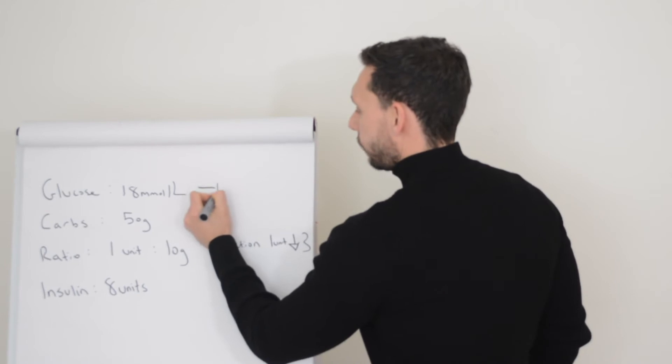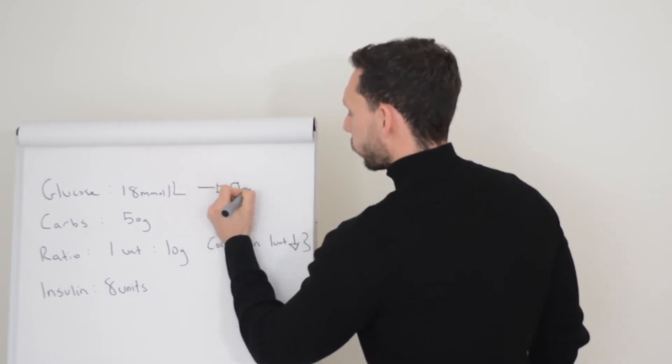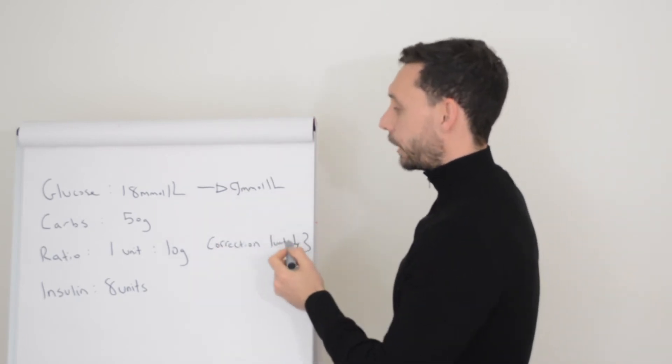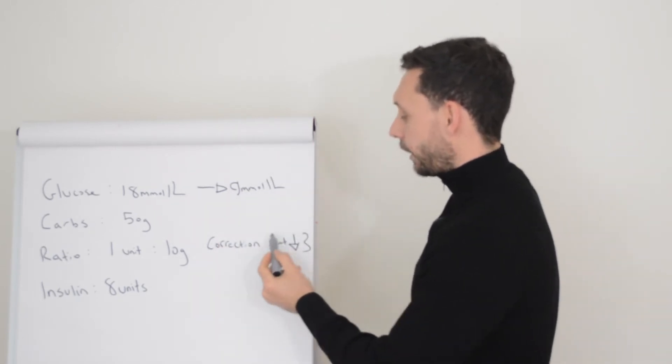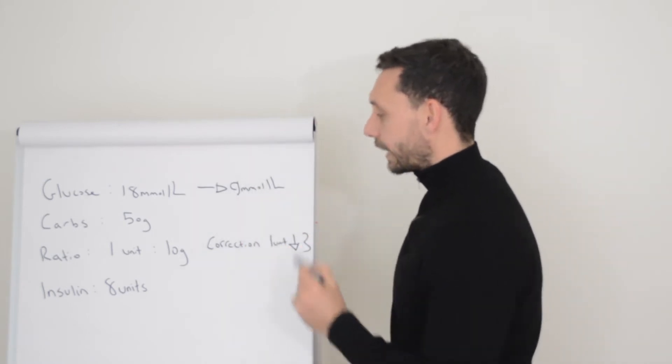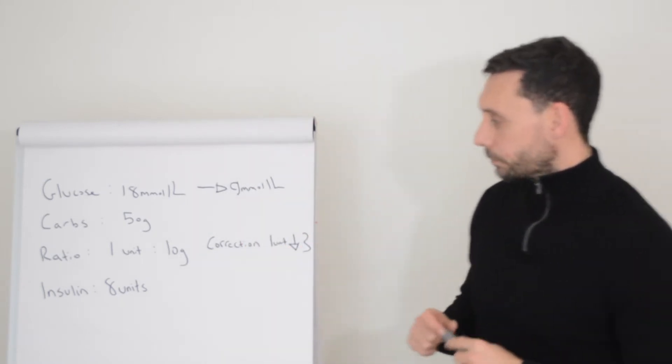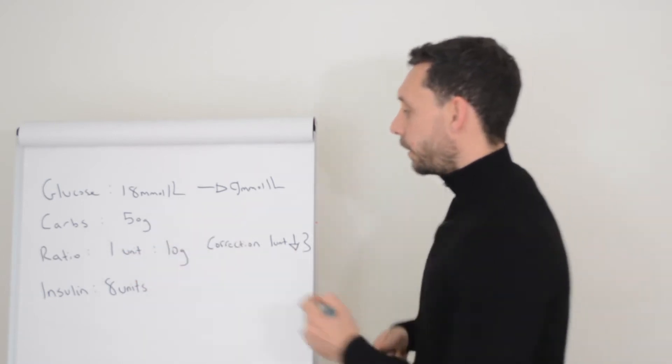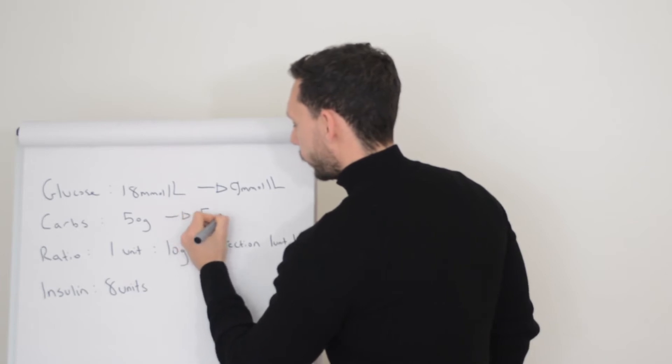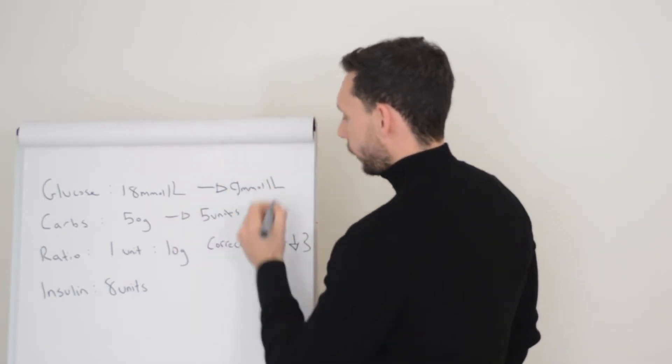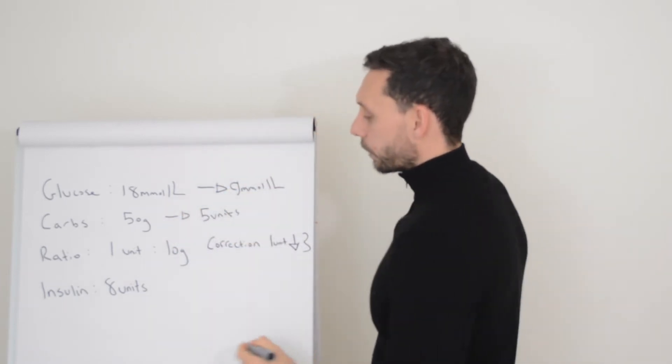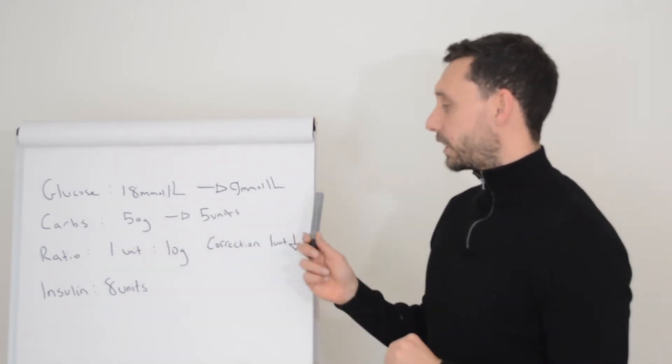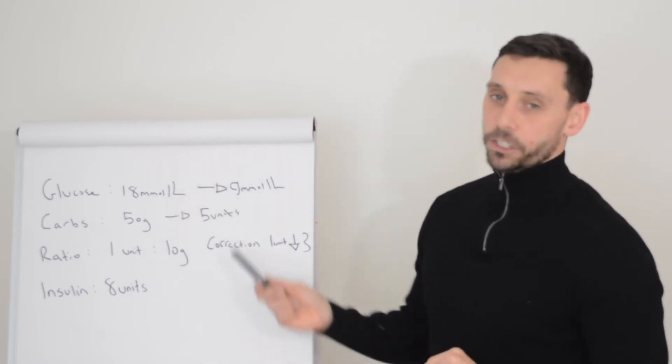We're going to correct back to nine because the math works quite nicely on a one unit drops three. So in order to do that, we need to take three units because one unit drops three. Therefore, if we take three units, it drops us nine, which gets us back to nine. We've also got a ratio of one unit to 10, so 50 grams is five units to cover that. And this takes three units, so our total insulin dose is eight units. We are now giving two insulin doses together so we can't really test which ratio is actually correct.